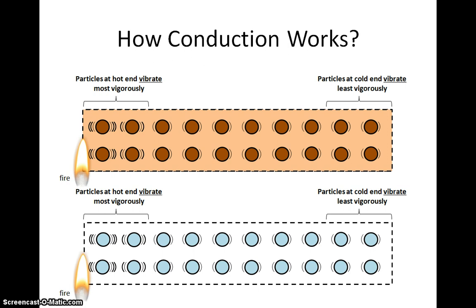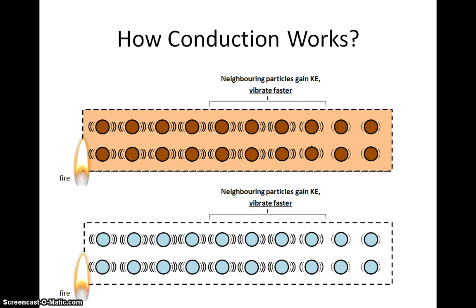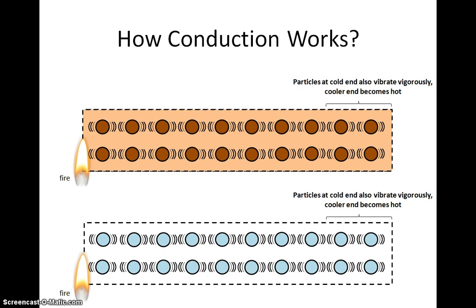These particles that are vibrating faster then collide with their less energetic neighboring particles. Some of their energy is then transferred to their neighboring particles. The neighboring particles in turn vibrate faster. In this way, thermal energy is transferred from the hotter end to the cooler end.